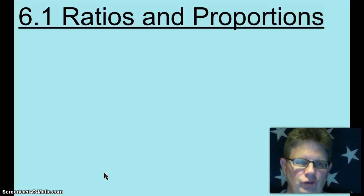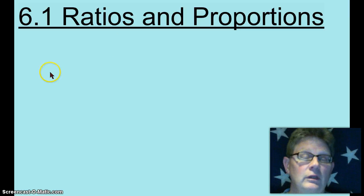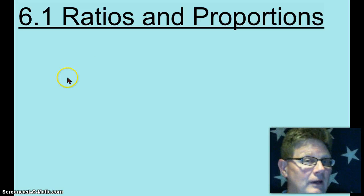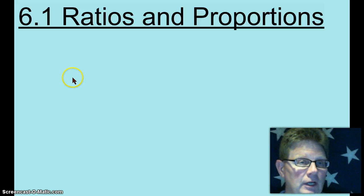Welcome to Honors Geometry 6.1, Ratios and Proportions. This chapter is about similar triangles, triangles that have the same shape but not necessarily the same size. Because of similar triangles, we're going to have to work with ratios and proportions so we can talk about the corresponding sides of similar triangles. We're going to start out with ratios and proportions.